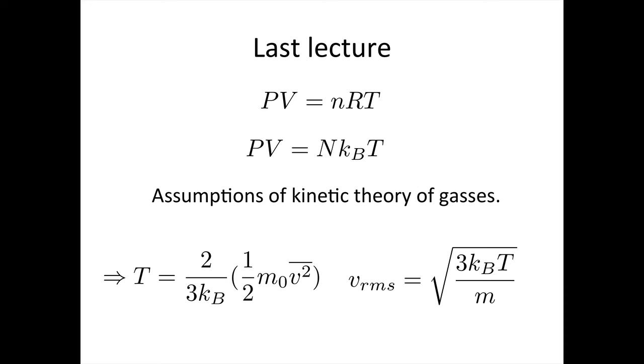And we saw that this average speed is given by the root mean squared speed, and so we can write that the root mean squared speed vrms equals the square root of 3kBT over m. So that's just rearranging our formula for temperature here.